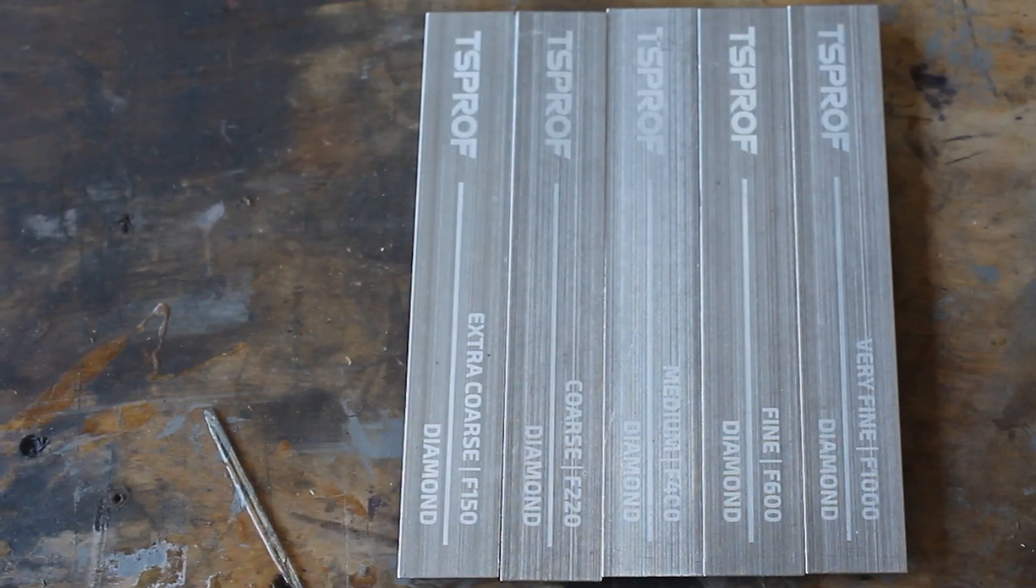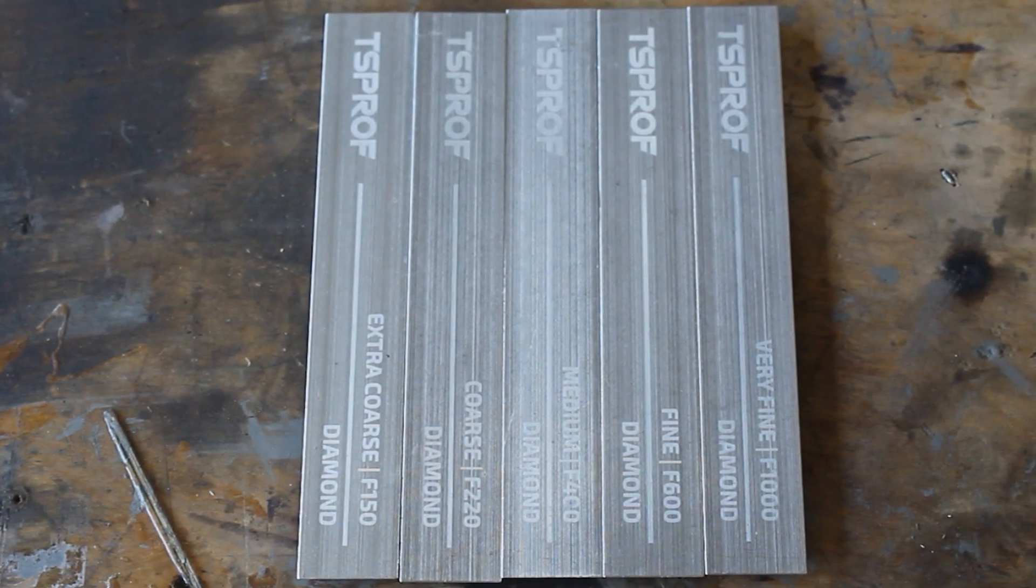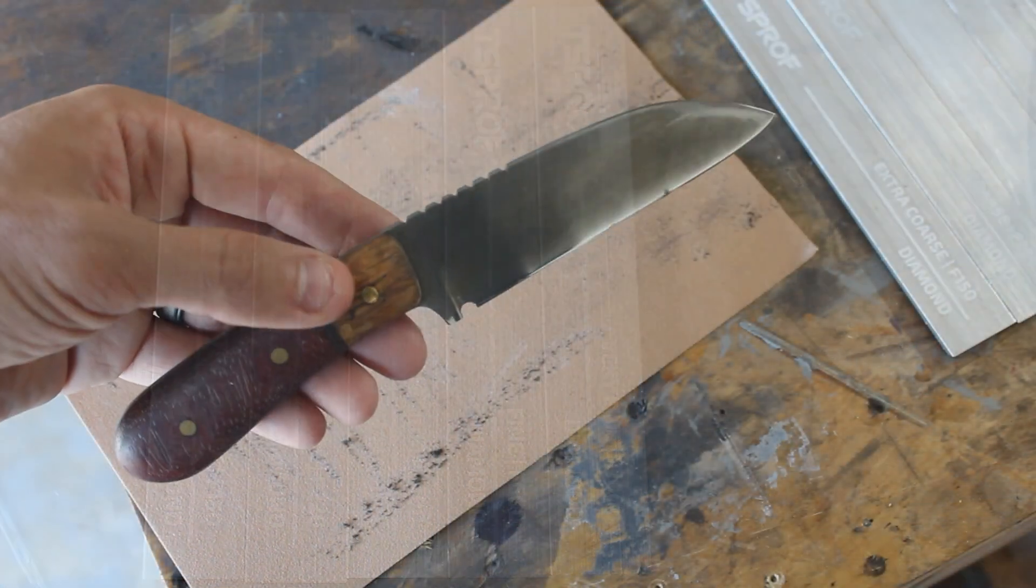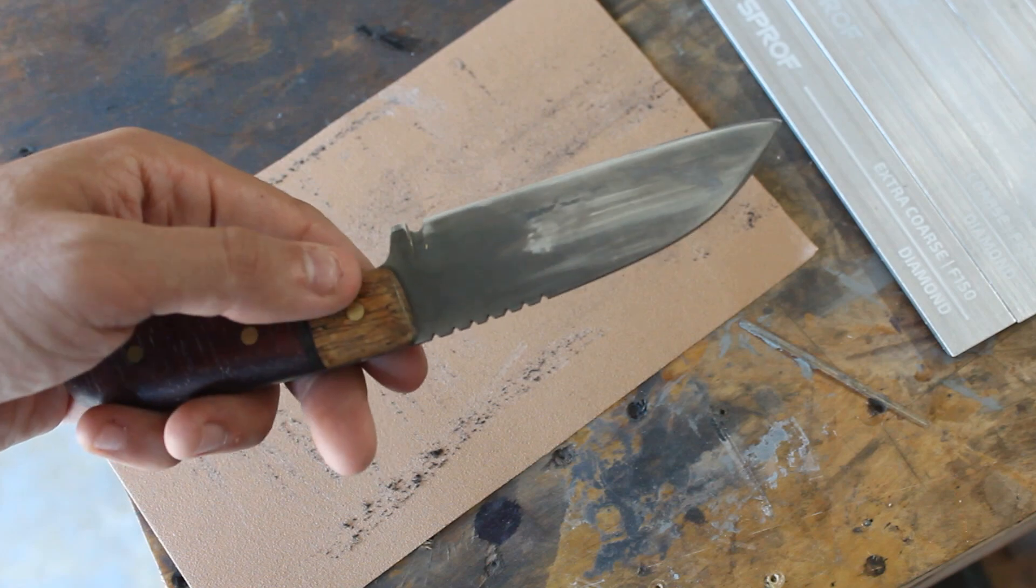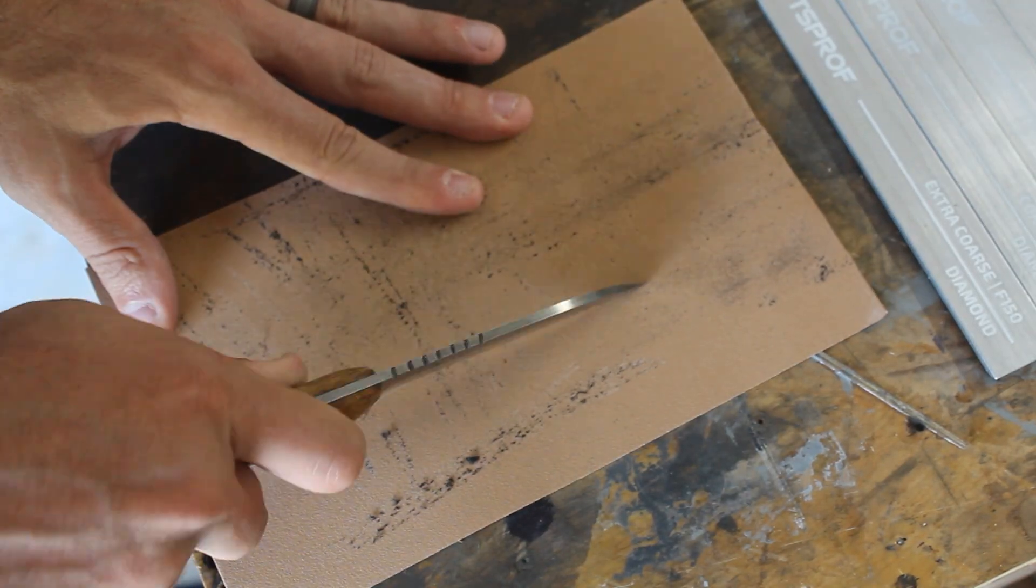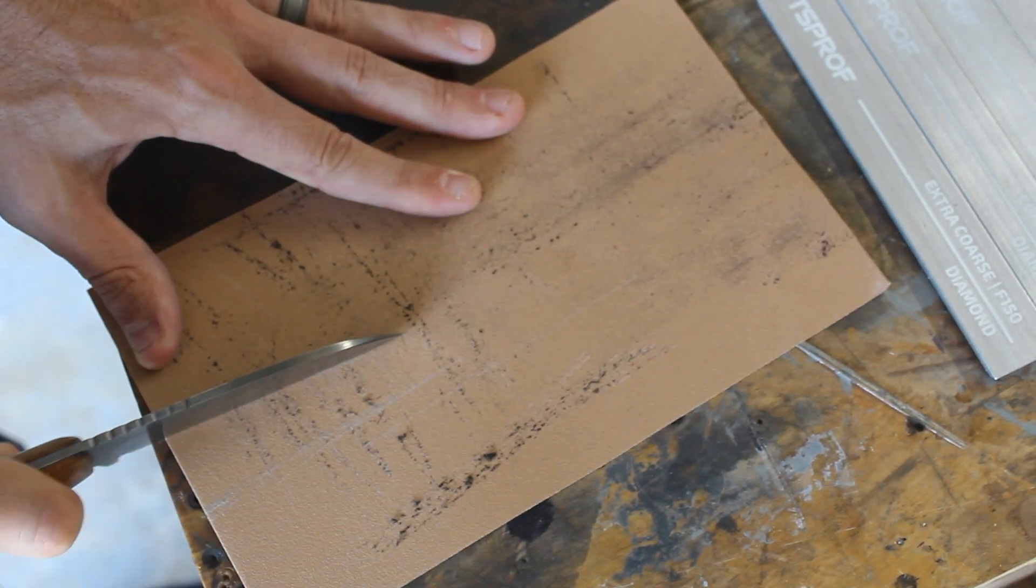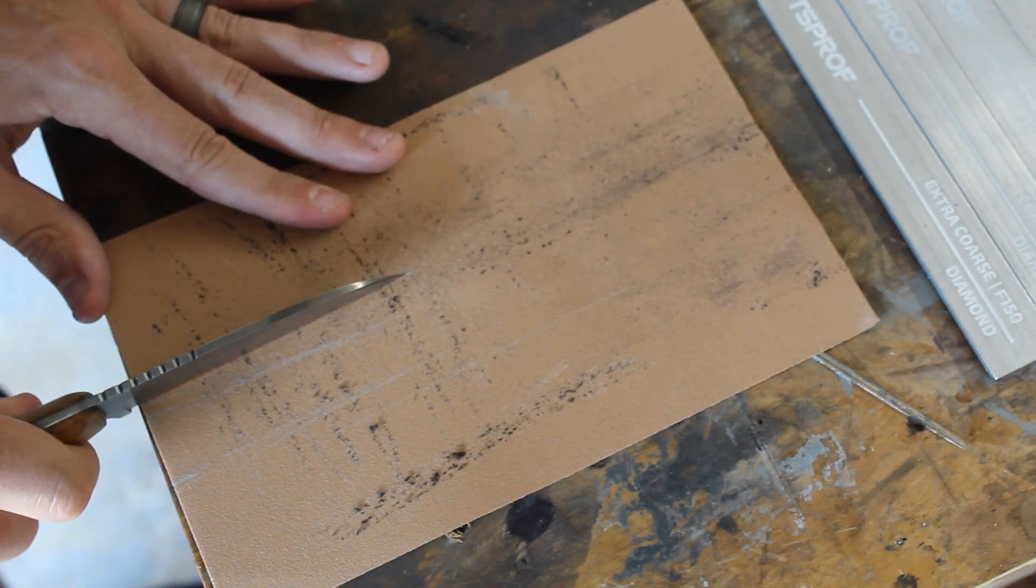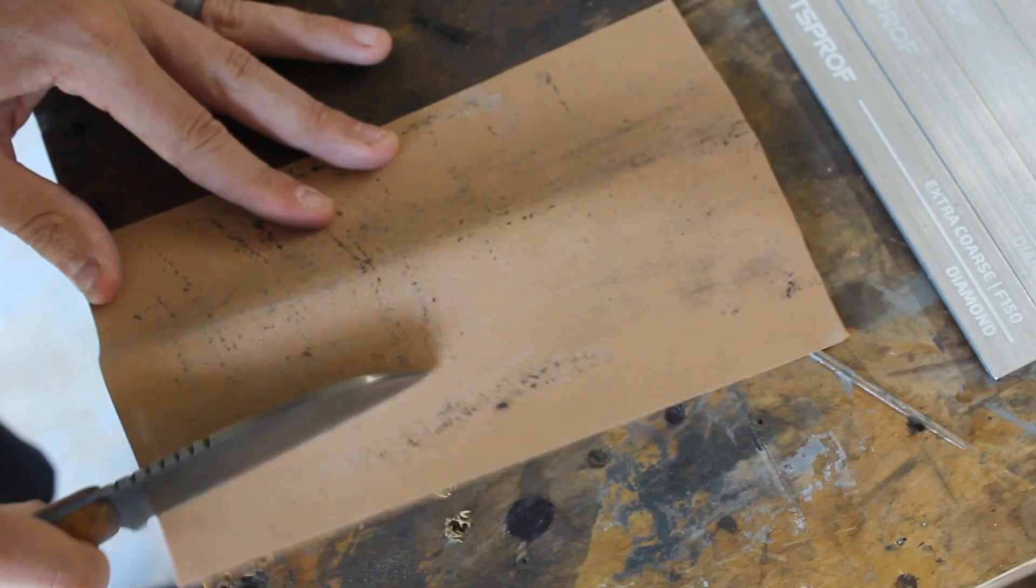So they included a set of diamond stones: 150, 220, 400, 600, and 1000 grit. And I think that it's really important that you have diamond stones and not wet stones because the wet stones will become unflat and get gunked up and they kind of just cause problems. They also don't cut steel as well. So it's important to have diamond stones with these sharpeners.